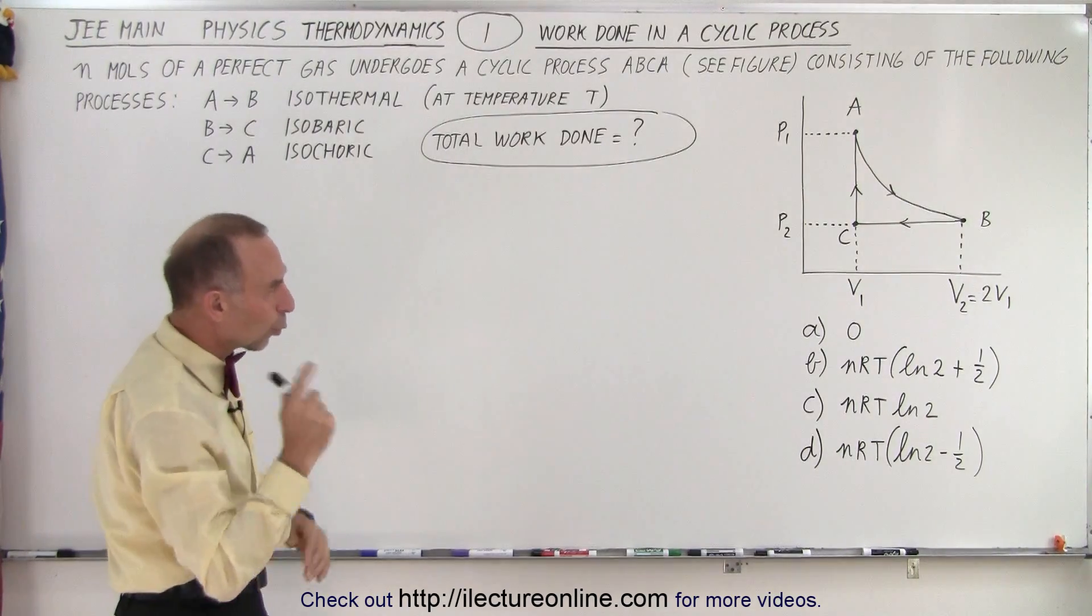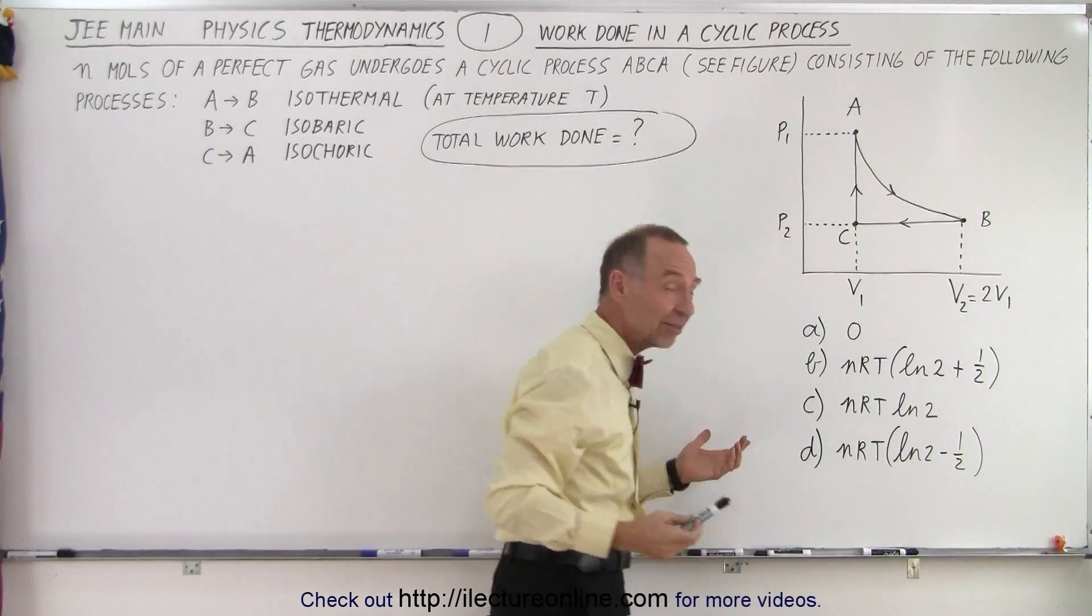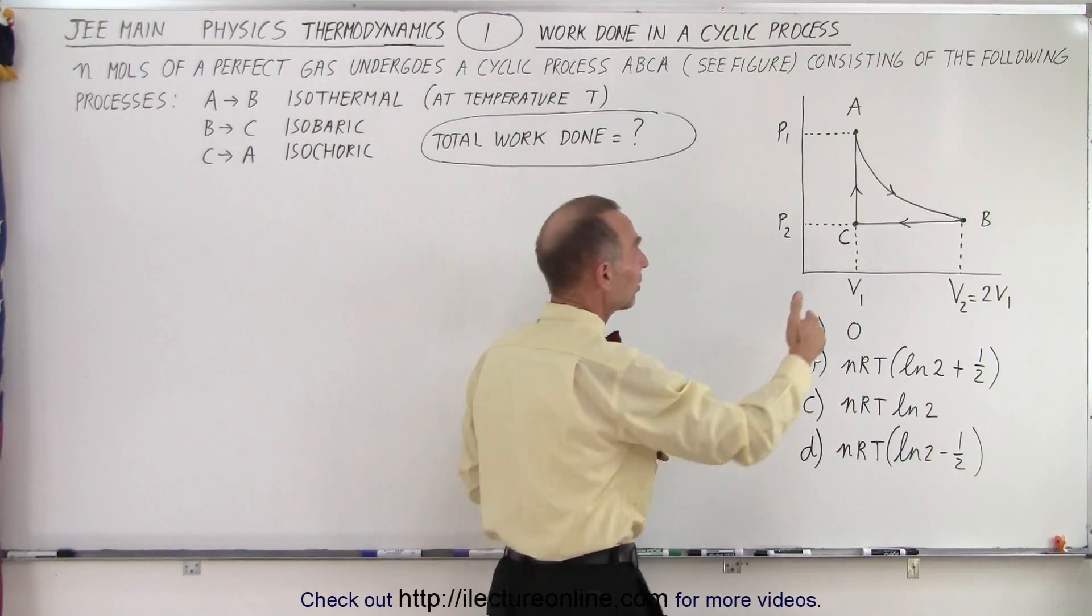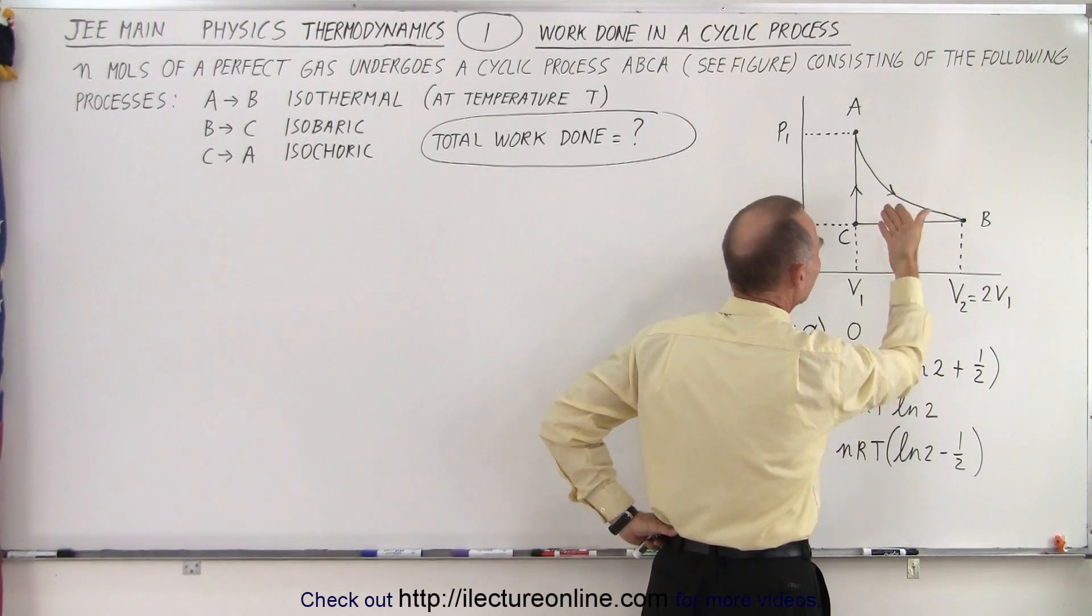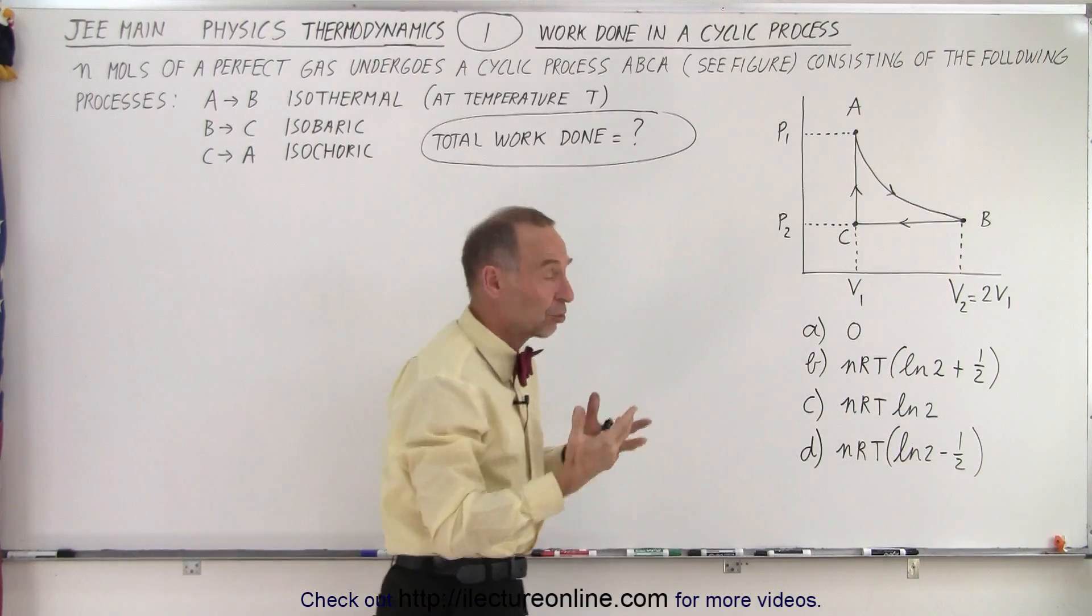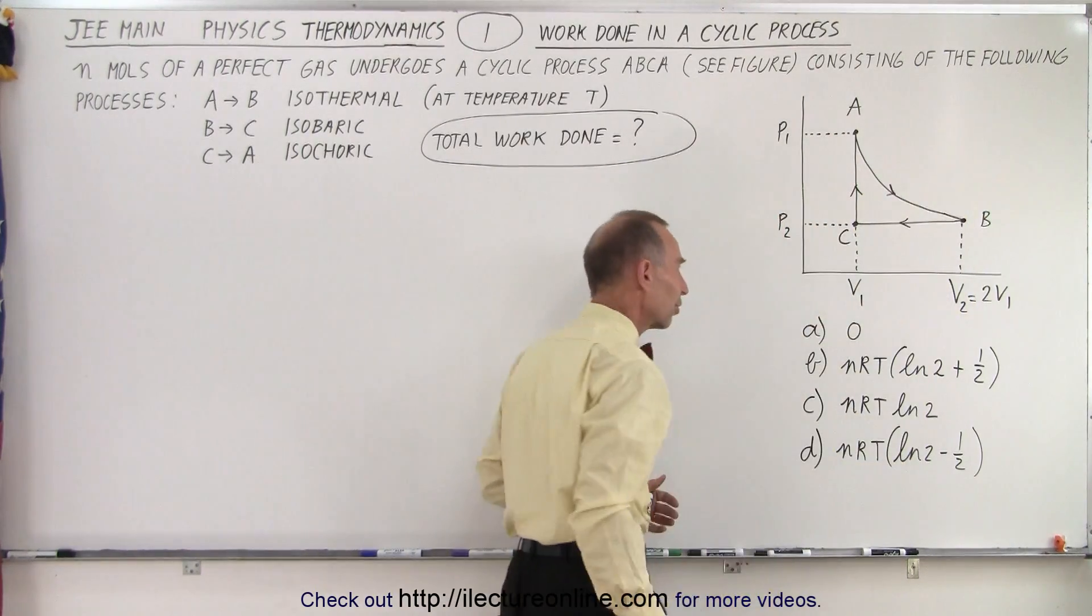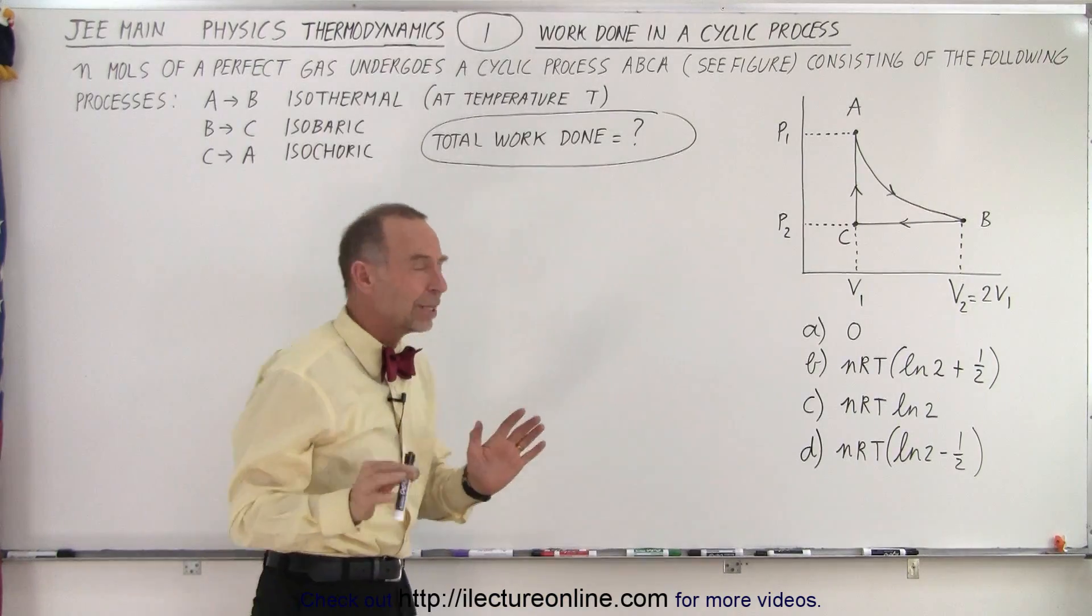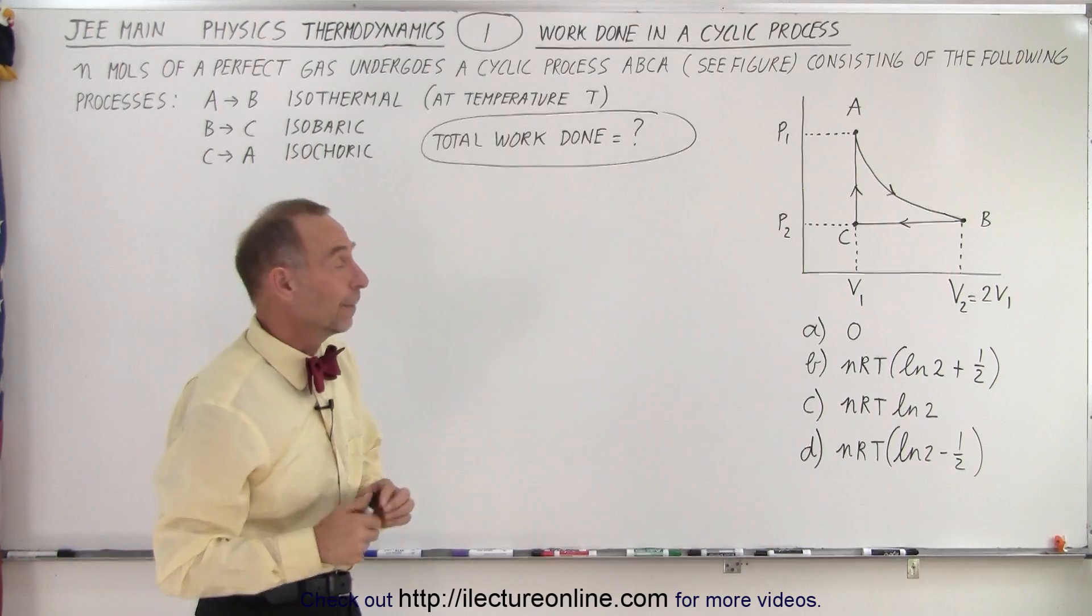Typically, the work done equals the area inside the cyclic process. But since one of the curves is a logarithmic curve, it's not easy to calculate it simply by the geometry. If this was a straight line it would be easy, but it's an isothermal process. So what we need to do here is we need to figure out where work is done.